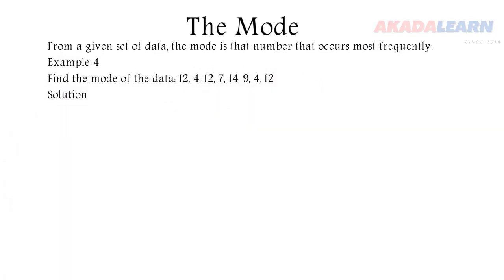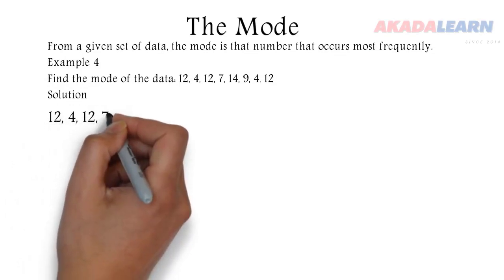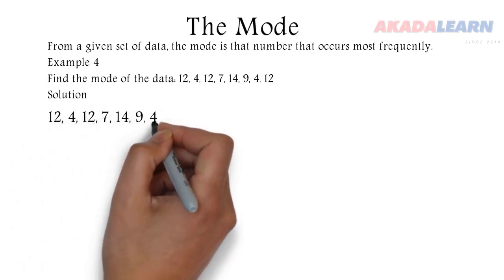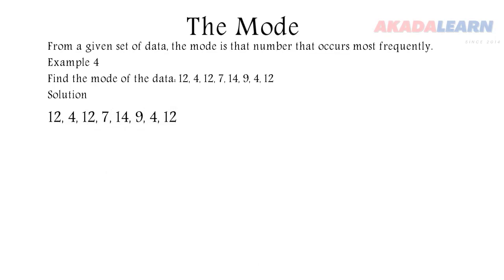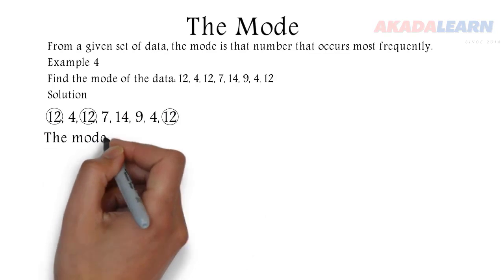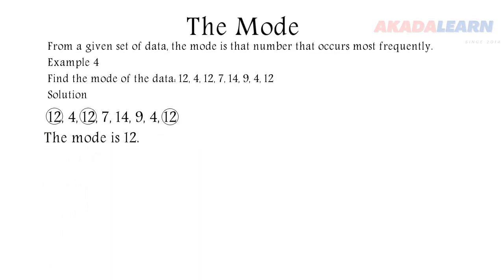Let's see an example: find the mode of data 12, 4, 12, 7, 14, 9, 4, 12. This time you don't need to rearrange, and we discover that our mode is 12 because 12 appeared three times, the highest number there.